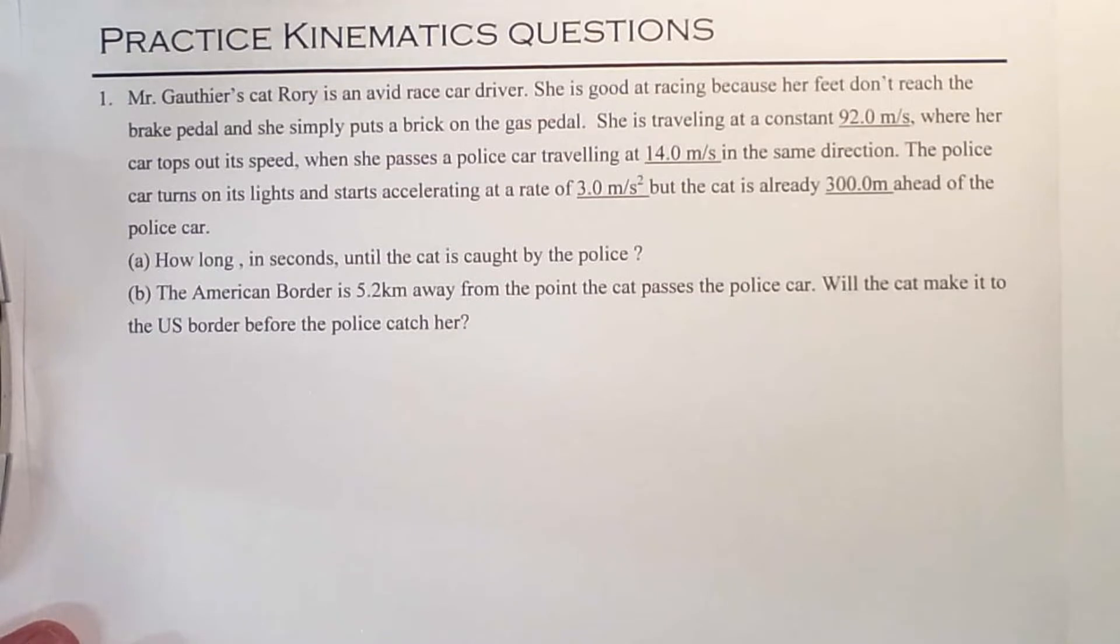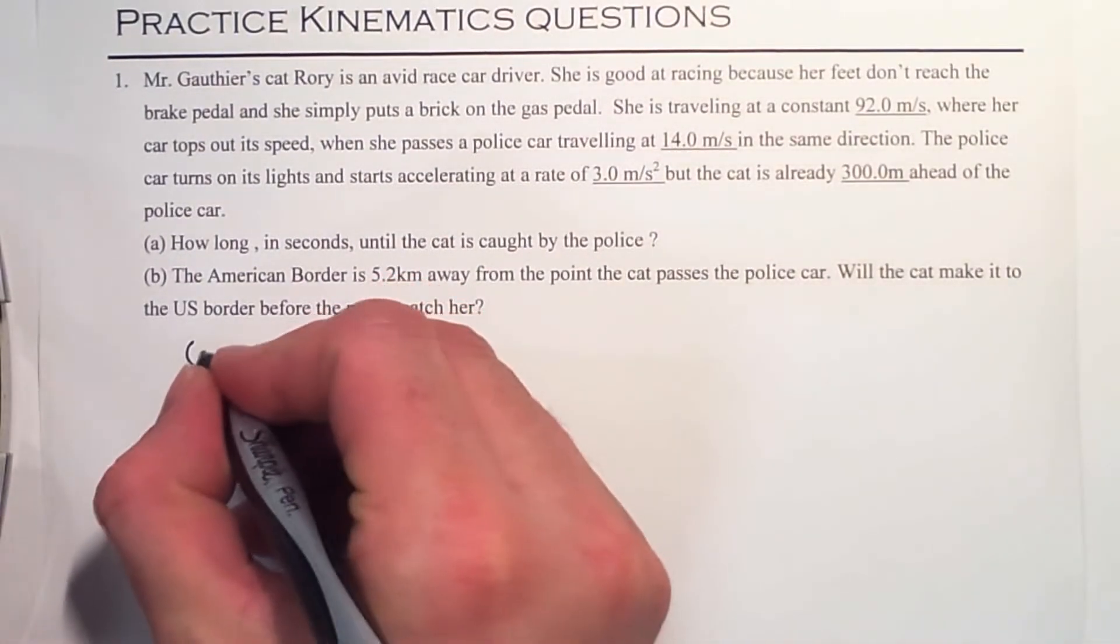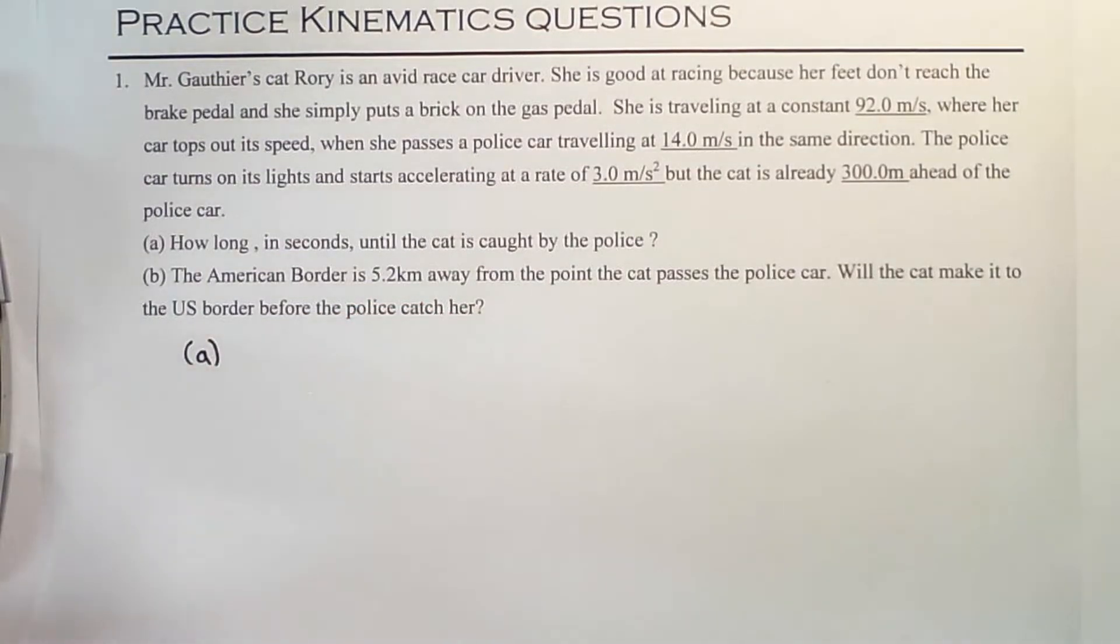When she passes a police car traveling 14 meters per second in the same direction, the police car turns its lights on and starts accelerating at a rate of 3 meters per second squared, but the cat is already 300 meters ahead of the police car. So how long in seconds will she be ahead of the police car?